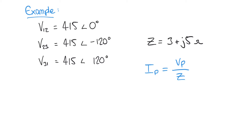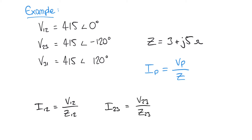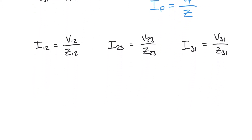We can set up three equations very easily: I1,2 = V1,2 / Z1,2; I2,3 = V2,3 / Z2,3; and similarly for I3,1. Let's calculate I1,2. We know V1,2 is 415 at an angle of 0 degrees, and Z1,2 is 3 + j5 ohms.